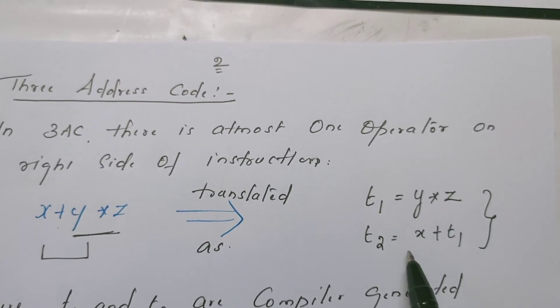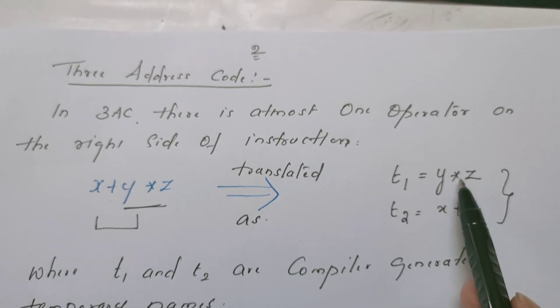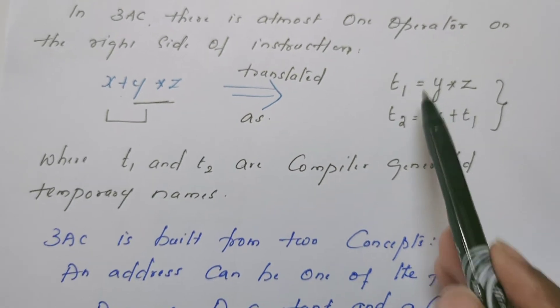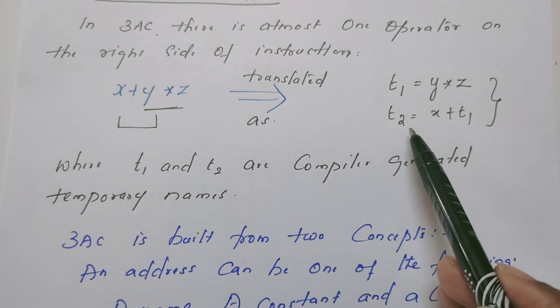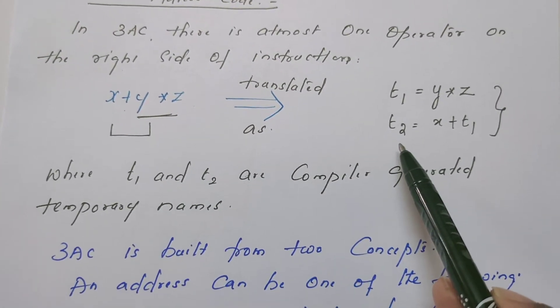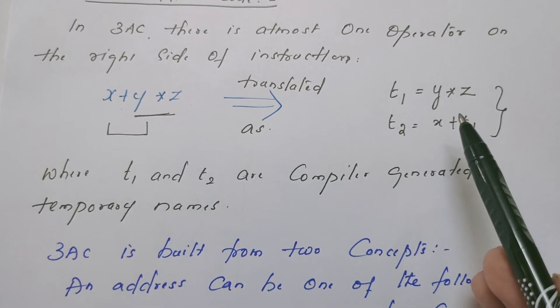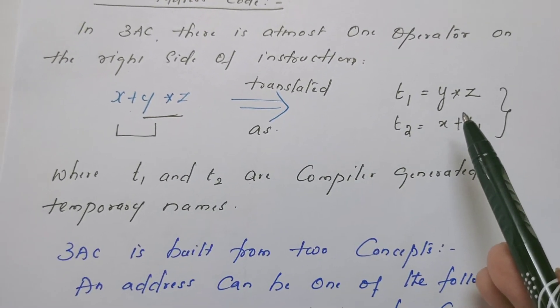At every instruction, there are at most 3 addresses and one operator on the right hand side. Here t1 and t2 are temporarily compiler generated names at that moment. Later, these names might be eliminated at the phase of code optimization.